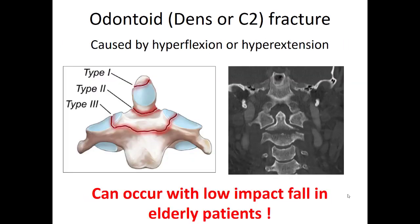A dens fracture, or C2 fracture, is most commonly seen in elderly patients and doesn't even necessarily require a massive mechanism. Sometimes they just fall and hit their forehead, causing the head to go back. The odontoid process — which helps the head swivel when turning the neck side to side — becomes more brittle with age. In elderly patients who take a fall and hit their head, seriously consider protecting the C-spine, as it doesn't take much force to fracture that little structure.